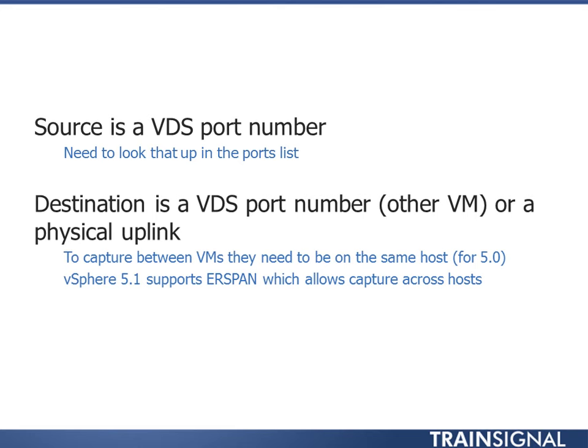The VMs need to be on the same host. With 5.1 we can do what's called an ERSPAN — encapsulate a remote span — where we can capture traffic on a VM on one host and send it to a VM on another host right using the VDS. Unfortunately, we can't do that on 5.0. So make sure to use something like a DRS group affinity rule to keep those VMs together in case DRS tries to vMotion them around.